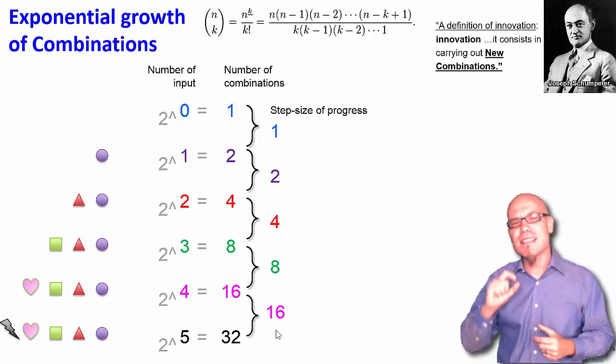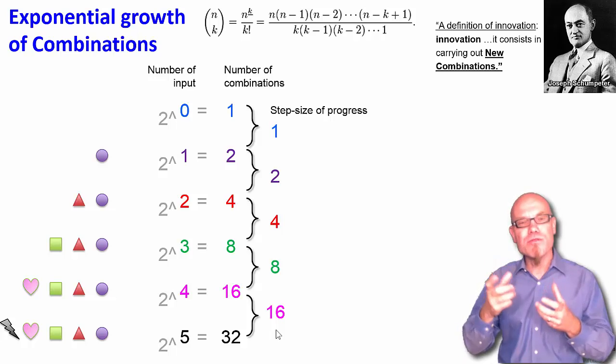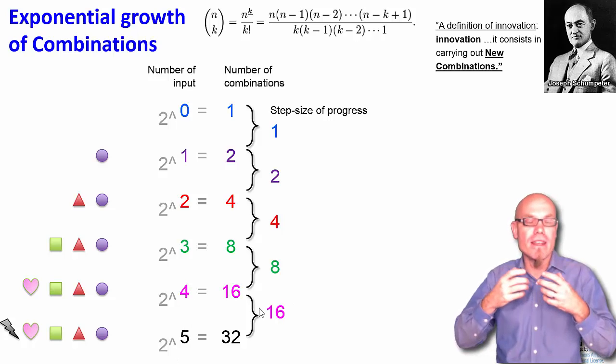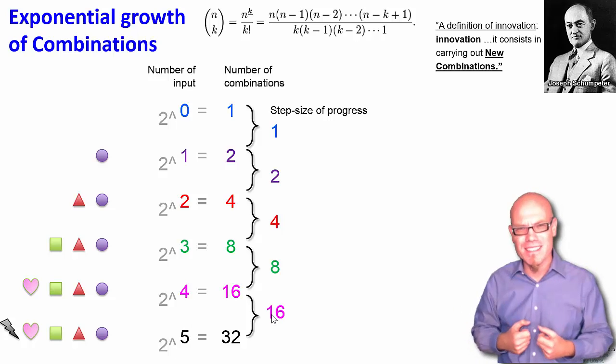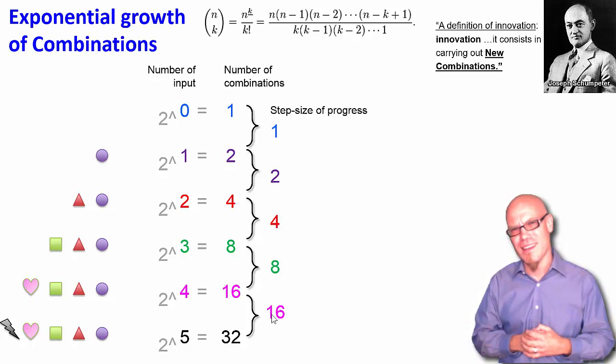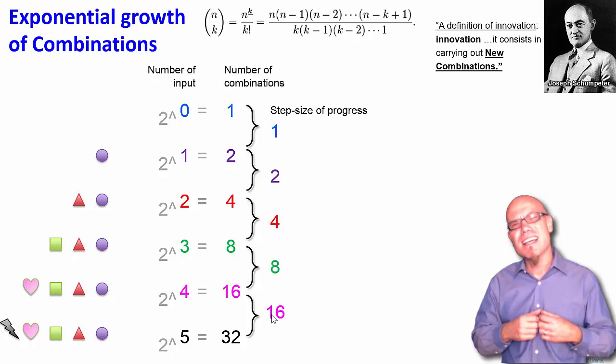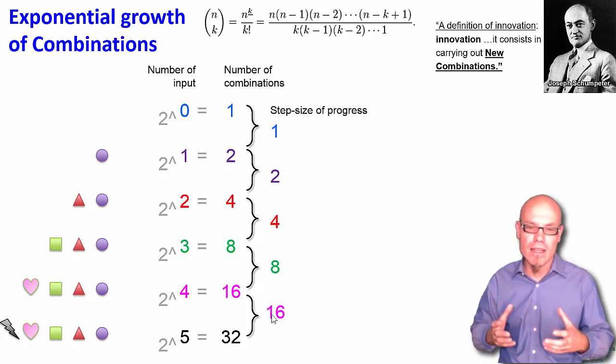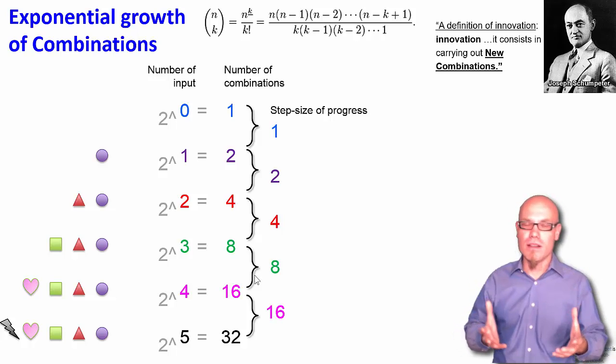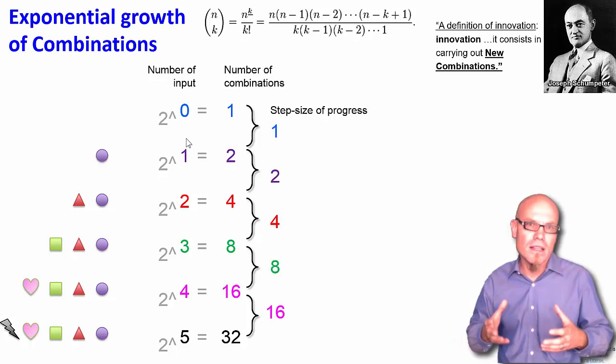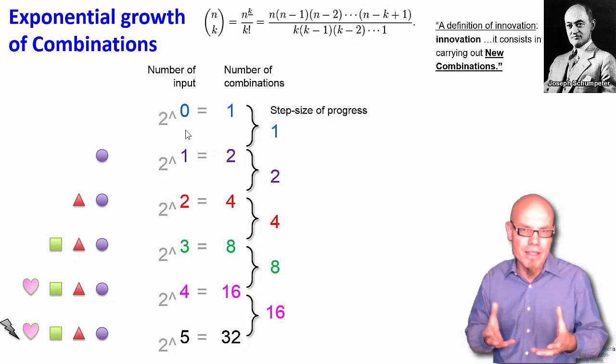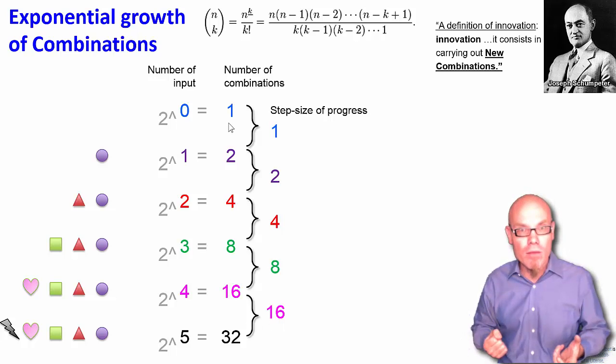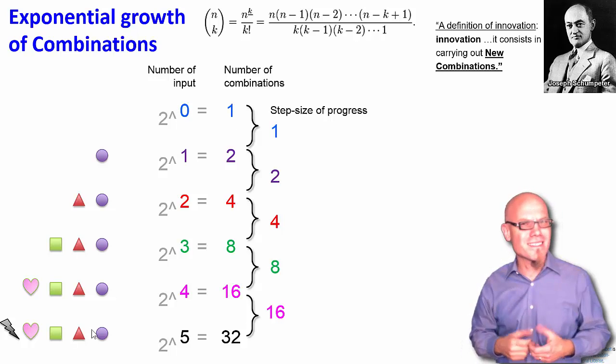Which also means that in the same number of steps, much more things can happen. So between step 4 and 5, I can invent 16 different things. That is a lot of things that are happening there. And that's why it seems to us that progress is accelerating, that it's always faster. Because back in the day, let's say between the year 0 and the year 1000, well, only one or two or three things happened. And nowadays, a lot of things are happening in a shorter time frame. Where does it come from? Well, from combinatorics, nothing else.